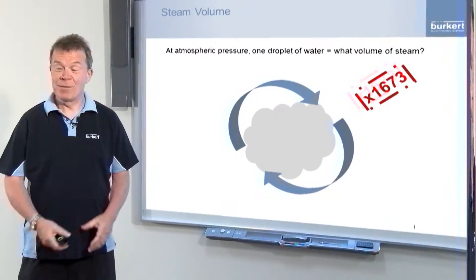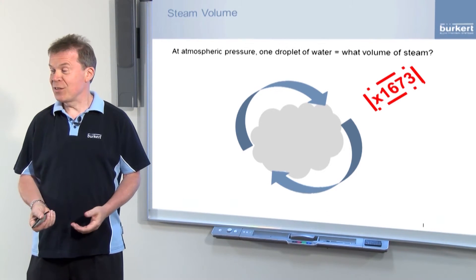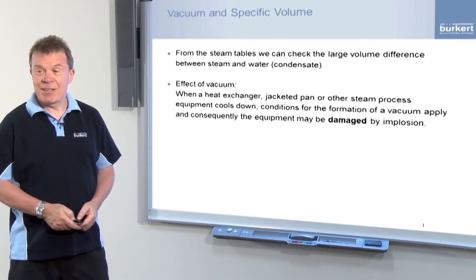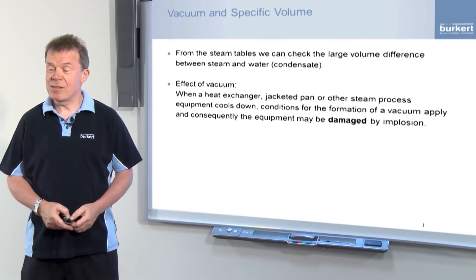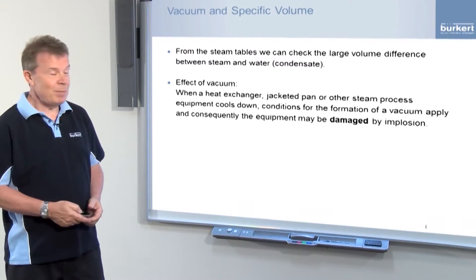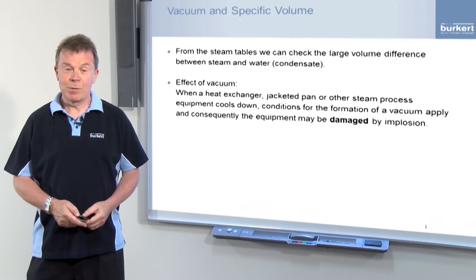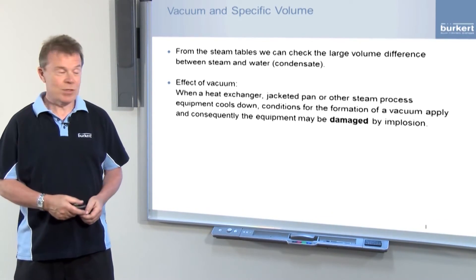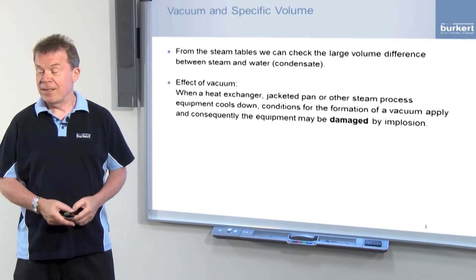It's important: if you mishandle steam, not only can it be inefficient, it can also be dangerous. We want to send you away after the day with a better appreciation of how you can improve things in terms of efficient use of steam, but also with a very good eye on the safety of steam. From the steam tables we can see that one droplet of water when converted to steam increases in volume by 1,673 times. When steam condenses it also reduces in volume by 1,673 times, and that reduction in volume can cause the creation of a vacuum. When a steam process such as a heat exchanger or a jacketed pan cools down, the conditions apply for the formation of a vacuum, and this vacuum can cause the equipment to be damaged by implosion.